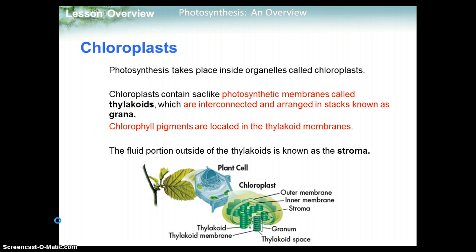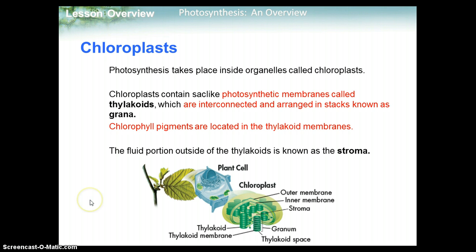The organelles in plants responsible for photosynthesis are chloroplasts. These contain stack-like photosynthetic membranes called thylakoids. One individual stack is a thylakoid, and when you stack them together, each individual stack is called a granum, or collectively grana. Chlorophyll pigments are located in the thylakoid membranes. The fluid portion outside the thylakoids but within the chloroplasts — the spaces between the thylakoids — is known as stroma. Different parts of photosynthesis take place in the thylakoid and the stroma.